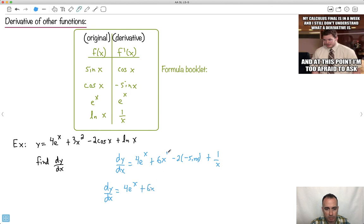And we're just going to say 6x. We won't put the 1 here. And a minus 2 times minus is a plus. So it's plus 2 sine x. And now we can say plus 1 over x. There we go. So this is our entire derivative here. We're done.